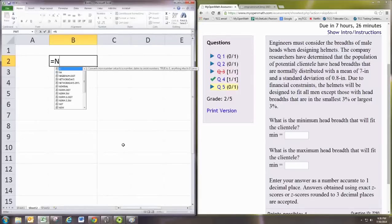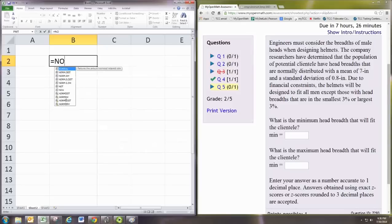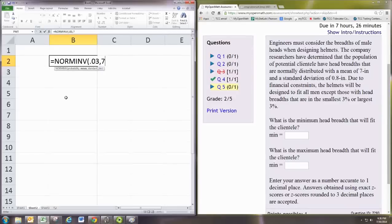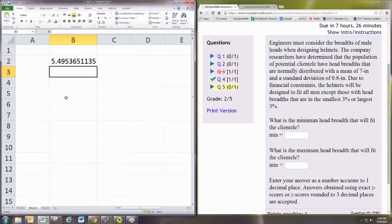So, let's do this in a spreadsheet. We do norm inverse, and we'll put in 3% first, and the mean is 7, and the standard deviation is 0.8. All right, there's the smallest head size we're going to use. And you want one decimal place, so we'll do 5.5.